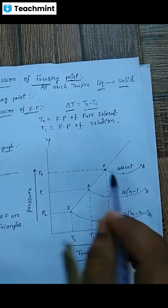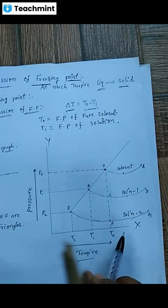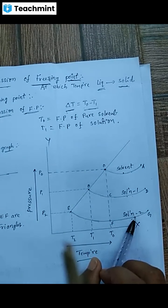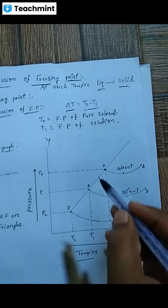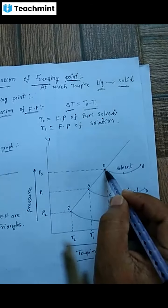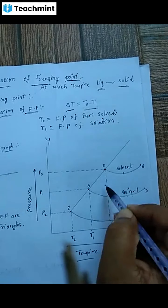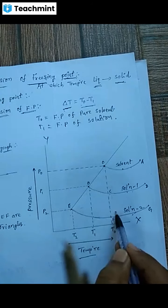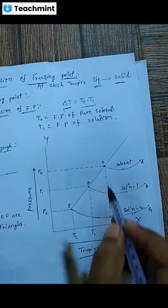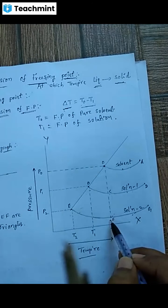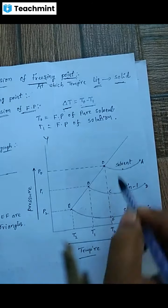This is the graphical representation. We have two similar triangles: O, B, C and O, E, F. These two triangles are similar to each other.